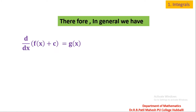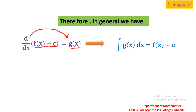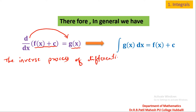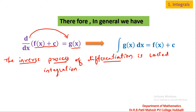In general, we can have d/dx of (f(x) + C) equal to g(x). If you take d/dx to the right-hand side, you get: integration of g(x) dx is equal to f(x) + C. This is called an indefinite integral. So finally, the indefinite integral is the inverse process of differentiation — inverse process of differentiation is called integration.